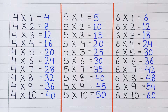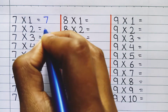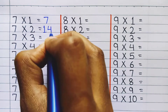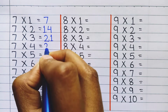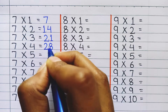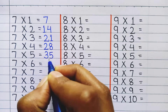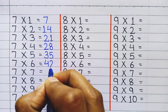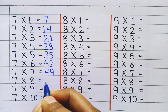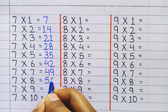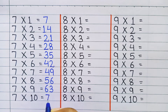Table of 7: 7 one's a 7, 7 two's a 14, 7 three's a 21, 7 four's a 28, 7 five's a 35, 7 six's a 42, 7 seven's a 49, 7 eight's a 56, 7 nine's a 63, 7 ten's a 70.